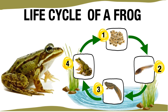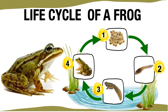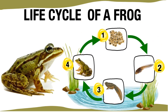Life Cycle of a Frog. Frogs are amphibians. They can live in water or on land. They go through several stages of life before they become adult frogs, and during those stages, they live only in water.